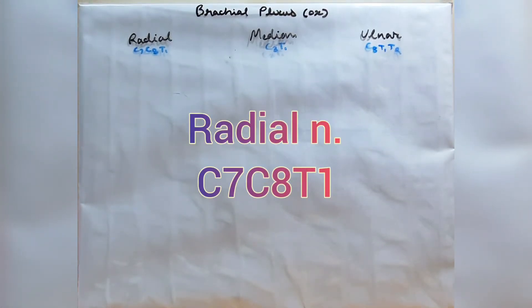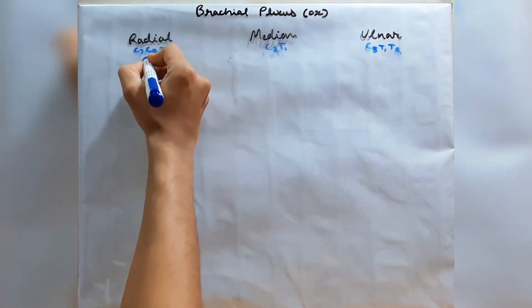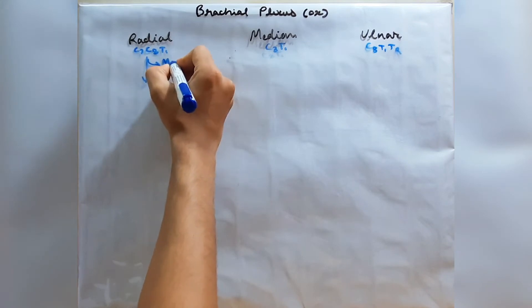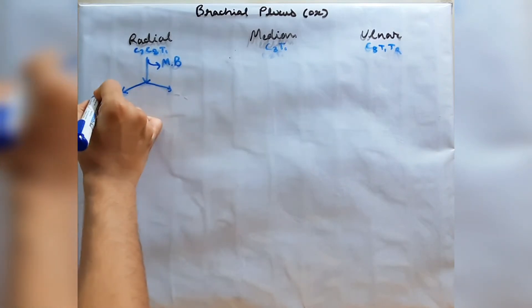The radial nerve is formed from C7, C8, and T1. It reaches the musculospiral groove of the humerus along the collateral radial artery and gives off muscular branches to the triceps muscle, tensor fasciae antebrachii, and anconeus muscles. It then divides into two trunks: a superficial trunk and a deep trunk.